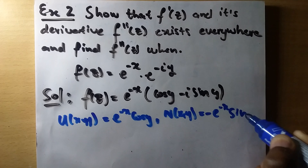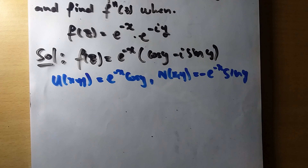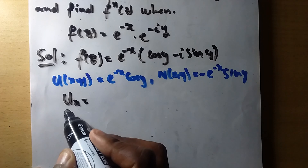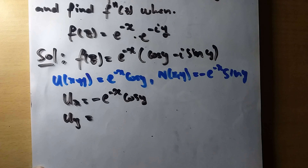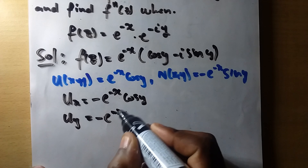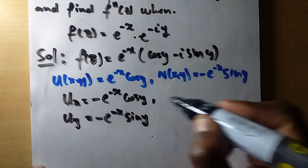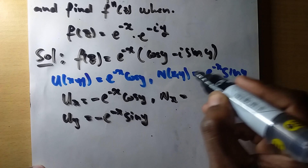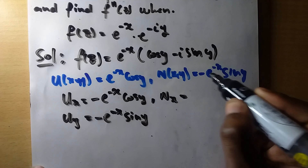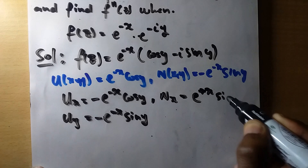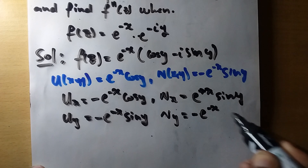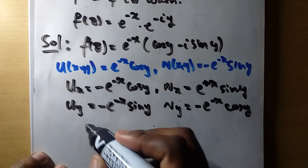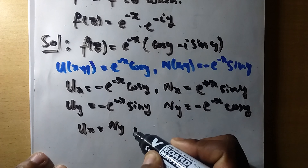We need to check whether the Cauchy-Riemann equations are satisfied. We compute: u_x = −e^(-x) cos y; u_y = −e^(-x) sin y (since the derivative of cos is −sin); v_x = e^(-x) sin y (derivative of e^(-x) gives −e^(-x), multiplied by −sin y); and v_y = −e^(-x) cos y.